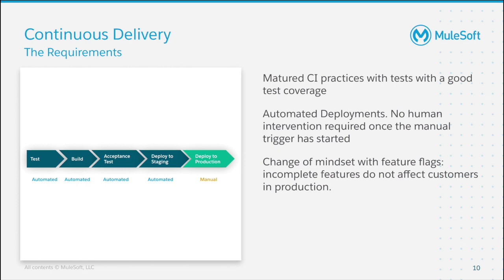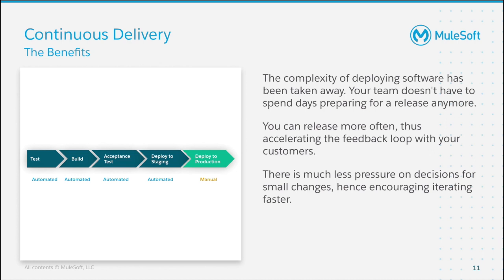The idea is that developers don't deploy directly to an environment — everyone does it through the pipeline so it can be tested. Lastly, feature flags allow you to accept that incomplete features do not affect customers in production. The benefits: deploying software is no longer a challenge, you can release more often, and you have far less pressure when making decisions about small changes.